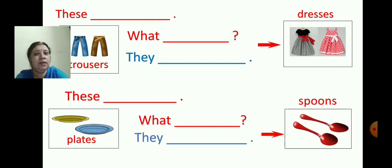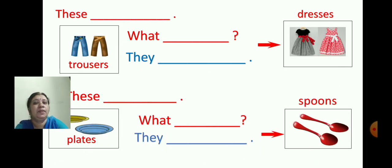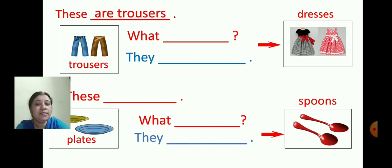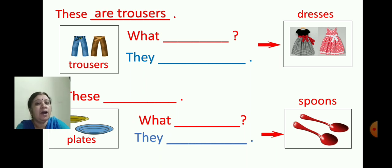Now see the picture. We will write the sentence: these are trousers. Children, you know trousers — pants. T-R-O-U-S-E-R-S — trousers.